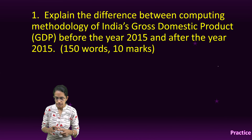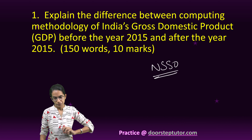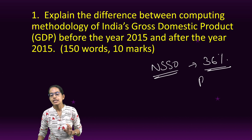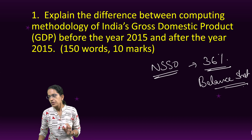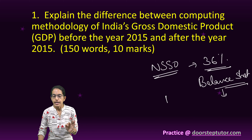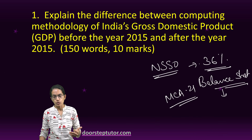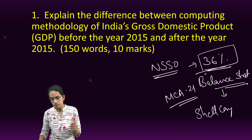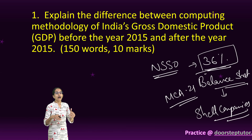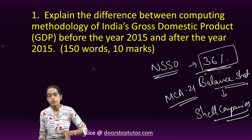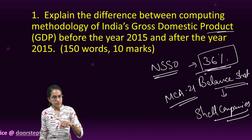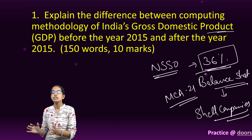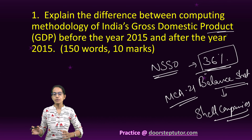There is another important thing: as per the NSSO report, a survey revealed that 36% of the companies which are part of the MCA21 database are shell companies. This shows that despite a huge number of companies having their domestic product registered as part of GDP, in real terms they are not contributing, because a company doing well would set up a shell company — essentially a Benami company — and a very different picture would emerge.